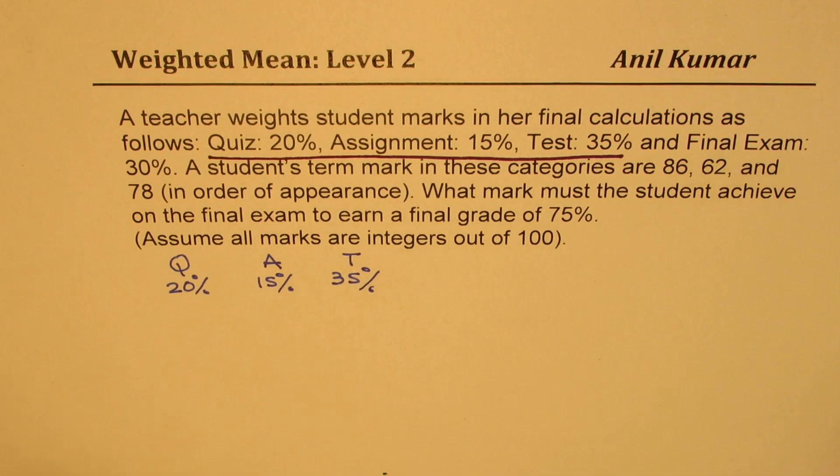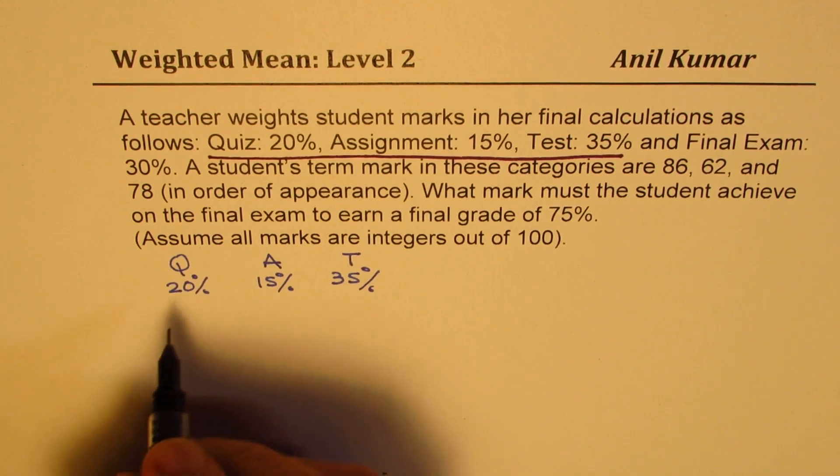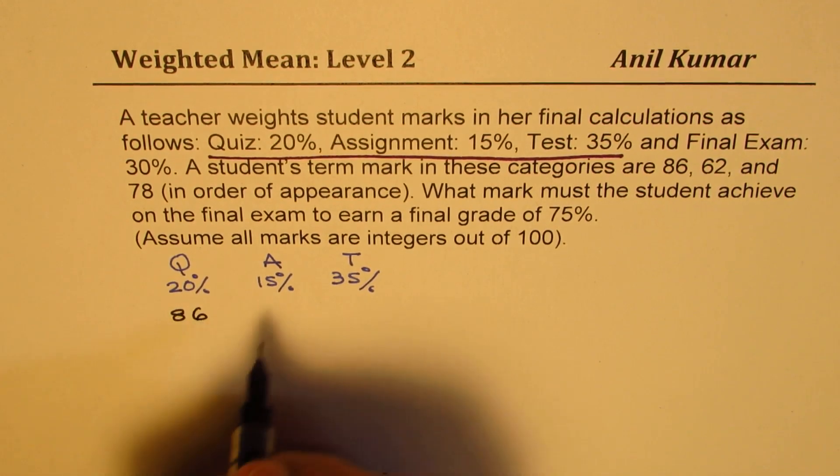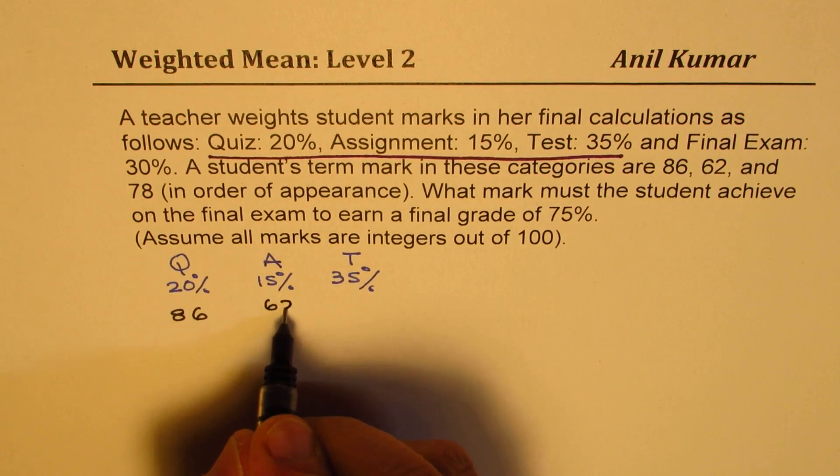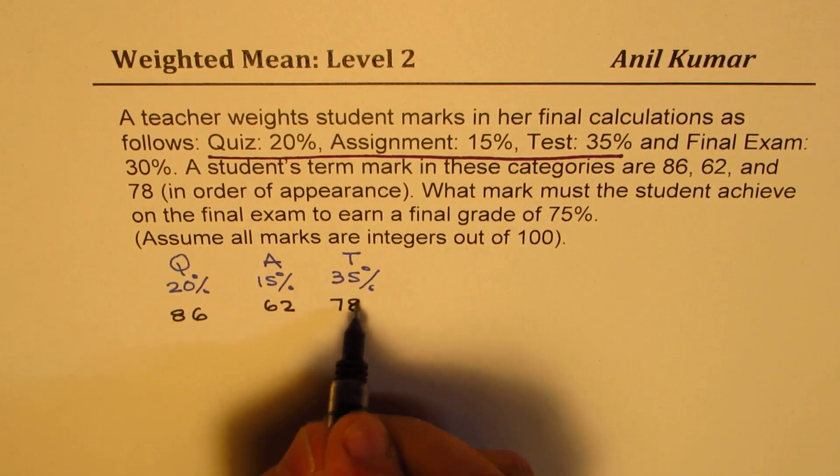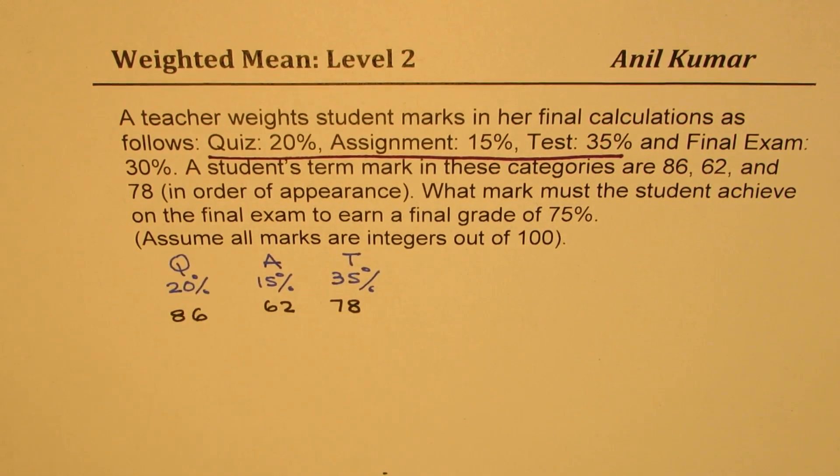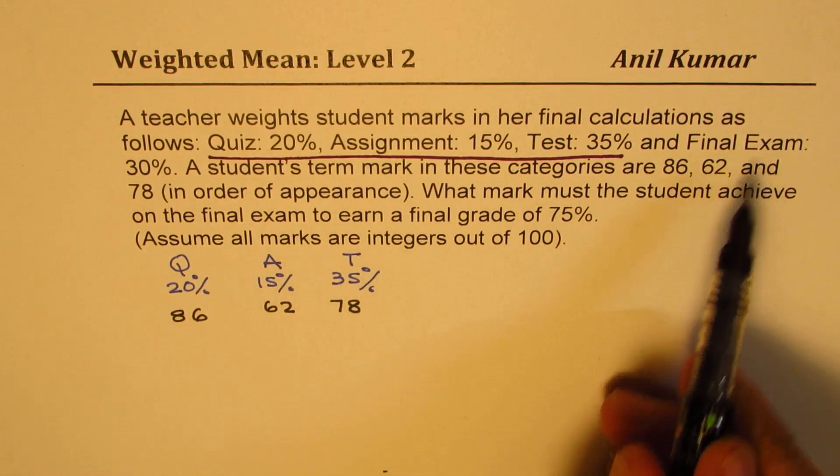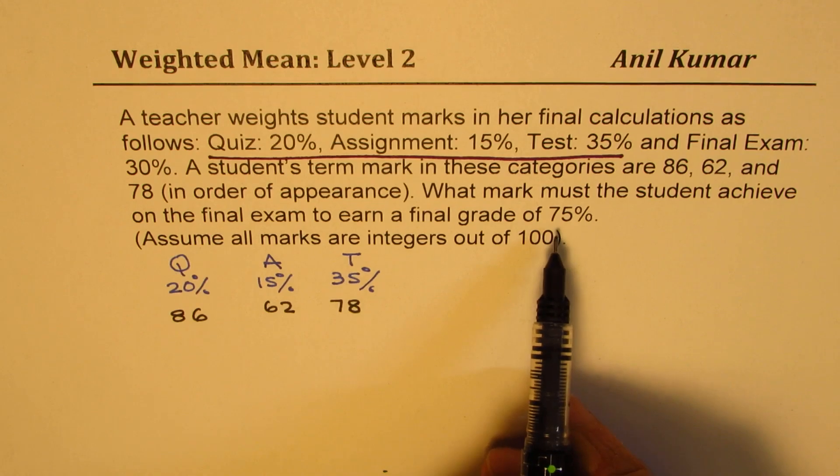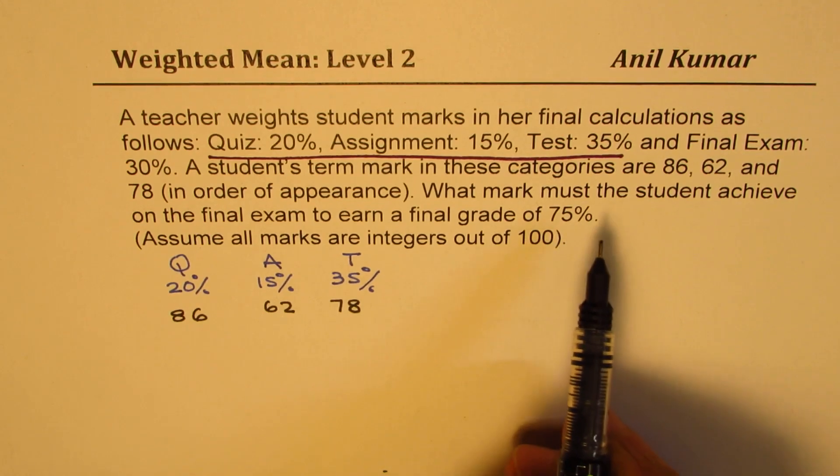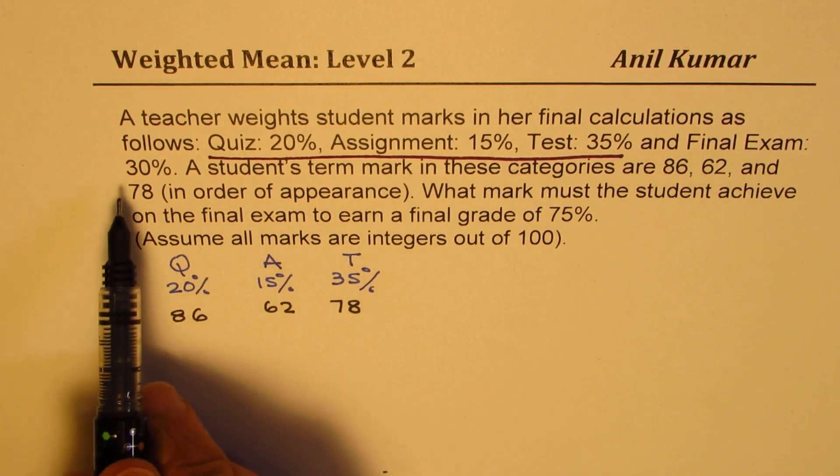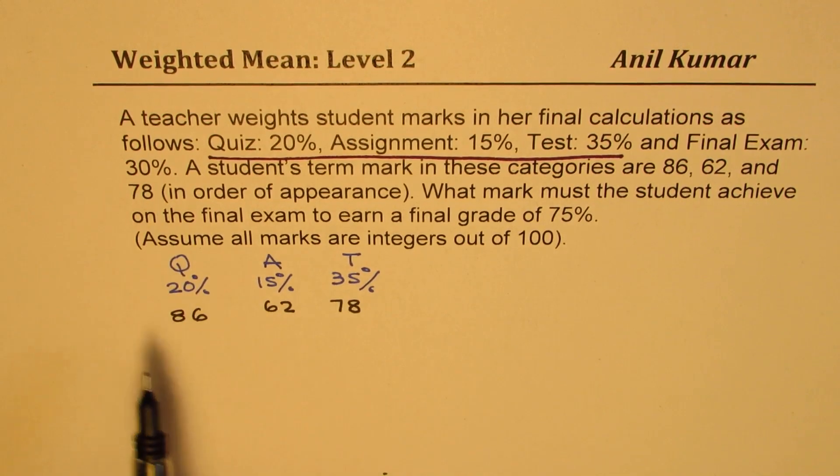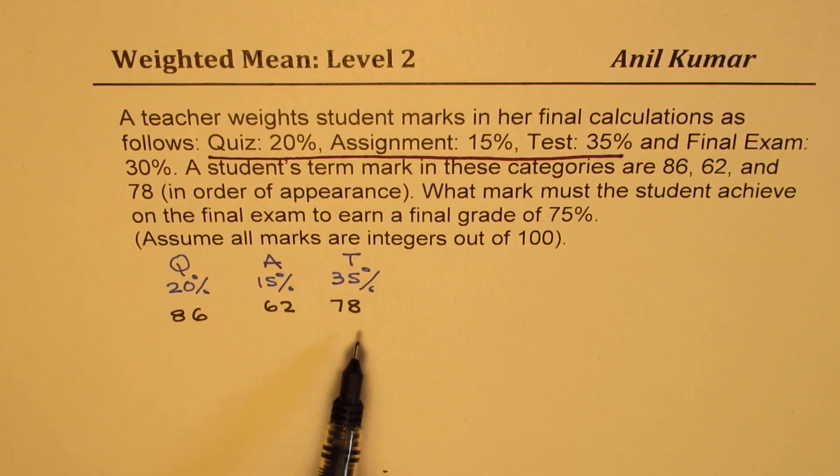Now in each of these categories, the marks obtained are 86, 62, and 78, right? We need to find what mark should the student get in final exam so that the final grade is 75%. Remember, the final grade weightage is 30%. So first we have to find weighted mean of the term.